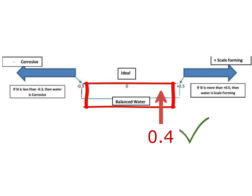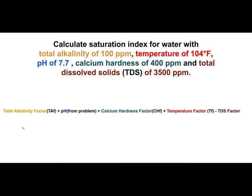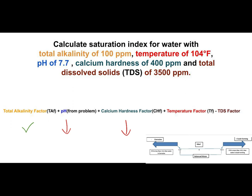If we wanted to make it a little more balanced, we'd look at alkalinity first — it's perfect. Then look at the pH of 7.7; we could lower that down to about 7.5, and lower the calcium hardness down to maybe 300 ppm. That would get us closer to zero on our ideal balanced water scale. And that, in a nutshell, is the Langelier Saturation Index, or water balance.